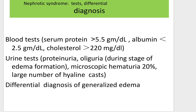Tests and differential diagnosis for nephrotic syndrome: we use laboratory investigations including blood tests and urine tests. In blood tests, the most important values are serum protein typically at a level more than 5.5, albumin less than 2.5, and cholesterol more than 220 mg/dL. In urine tests, the most specific findings are proteinuria, oliguria during the stage of edema formation, microscopic hematuria at around 20%, and a large number of hyaline casts. If you find these blood and urine changes in a patient with generalized edema, it is sufficient for differential diagnosis of nephrotic syndrome.